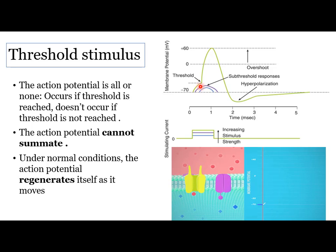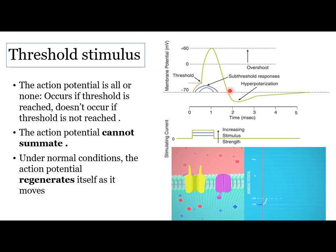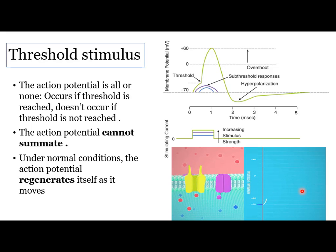If we increase the stimulus gradually until we reach the threshold, a threshold stimulus can generate an action potential or nerve impulse. A sub-threshold response cannot be propagated, but the action potential, once generated, can regenerate itself and travel along the axon. The threshold or sub-threshold response depends on the amount of sodium entry — more stimulus means more sodium influx until threshold is reached.